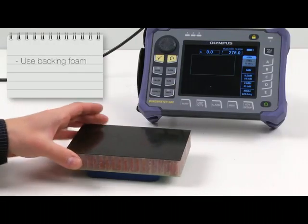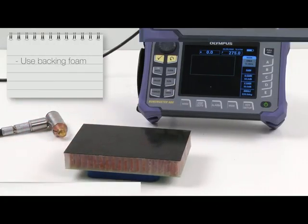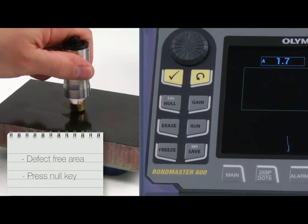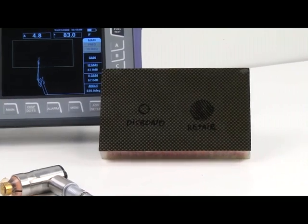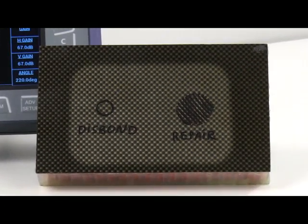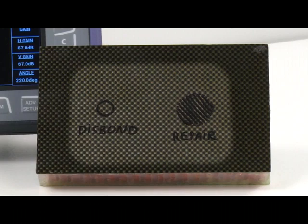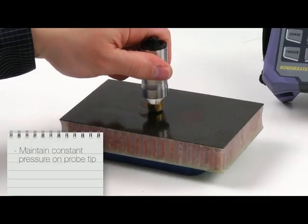You may use backing foam to achieve better results. Place the probe on an area free of defects and press the NULL key. It's important to know where the simulated defects are located to avoid mistakes during calibration.